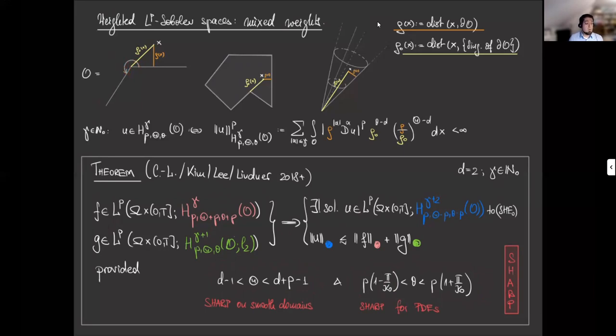And the nice thing is that these ranges are sharp. This is the sharp range if you would look at the equation on smooth domains, and this is the sharp range if you wouldn't have any noise. So in total, we have a sharp result and a very detailed description of the behavior of the solution at the boundary singularities, away from the boundary singularities, and how these two influences I mentioned above interact.